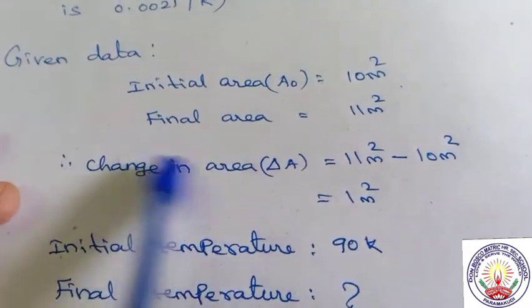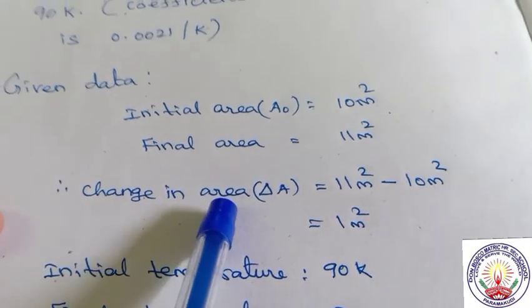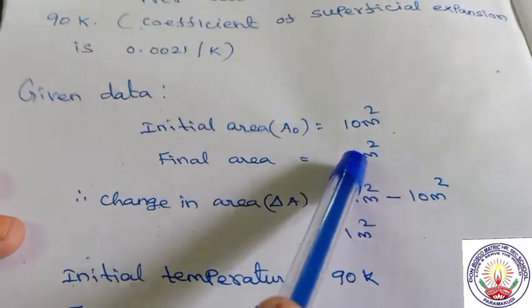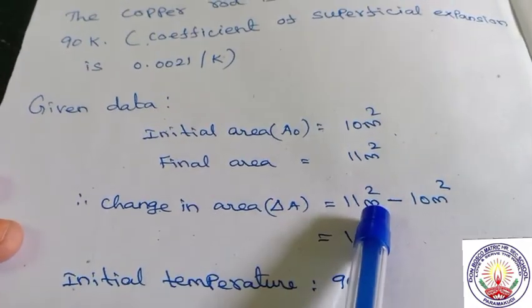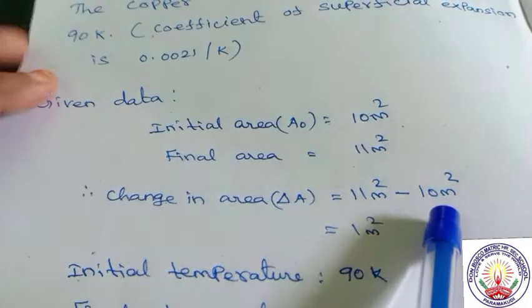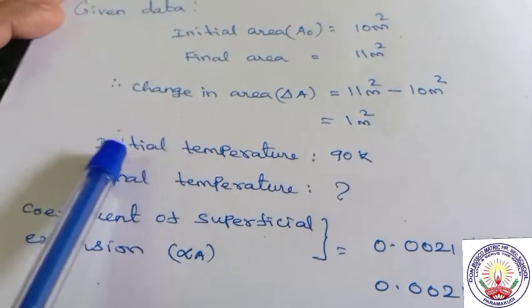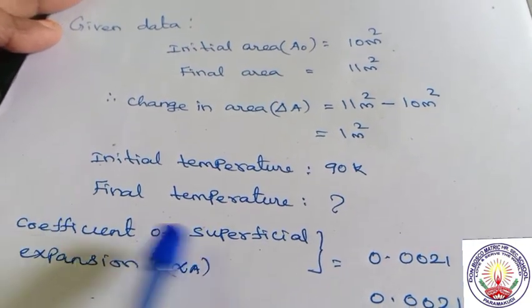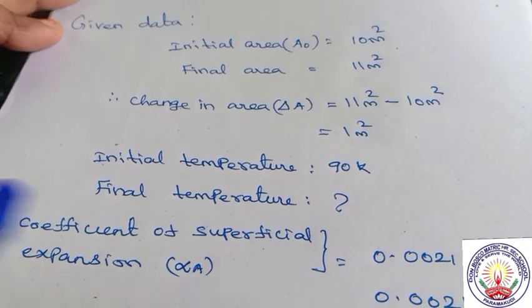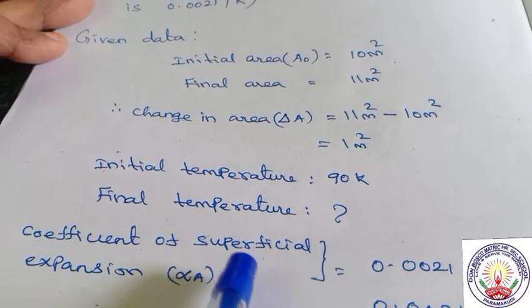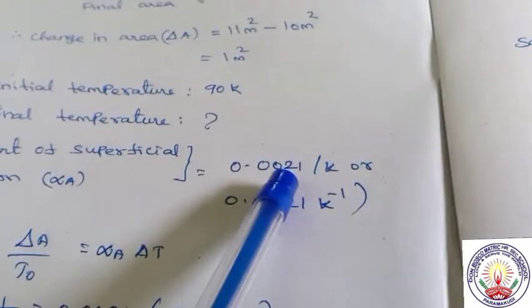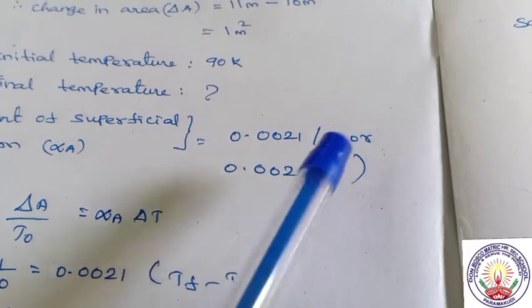Change in area, delta A, equals final area minus initial area. Final area is 11 meter square, minus initial area 10 meter square, so delta A equals 1 meter square. Initial temperature is 90 Kelvin. Coefficient of superficial expansion is 0.0021 per Kelvin.